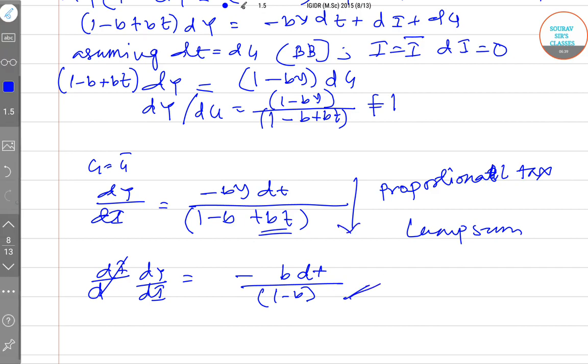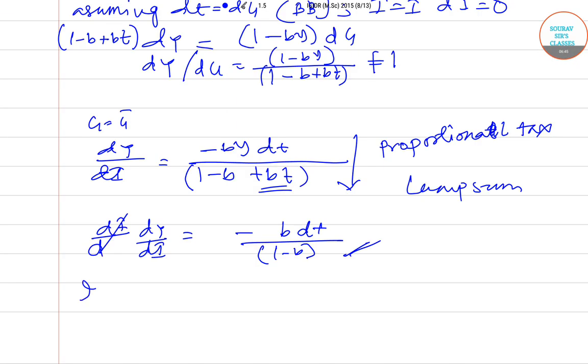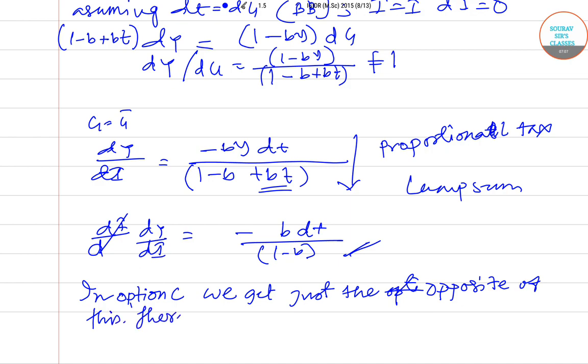In option C we get just the opposite of this. So therefore C is wrong and option 5 is the correct option.